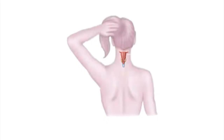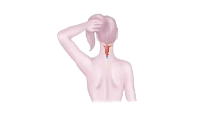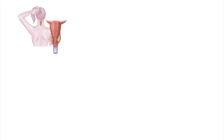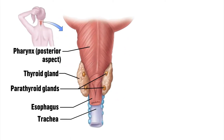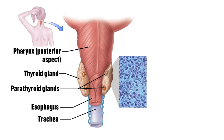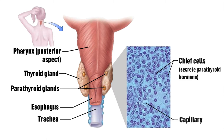Let us know about parathormone. Purified parathormone is a simple polypeptide chain. It has a short duration of biological activity. The half-life of the hormone is about 20 to 30 minutes only.